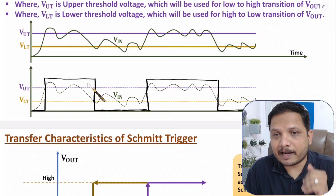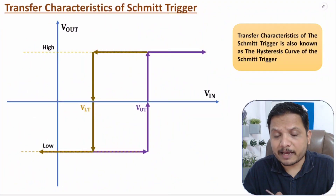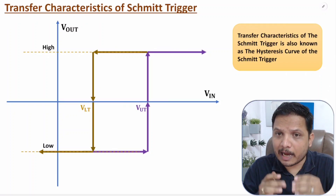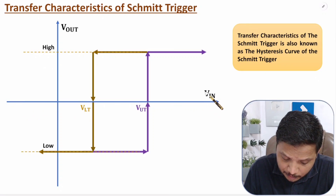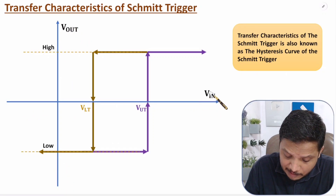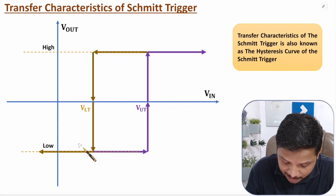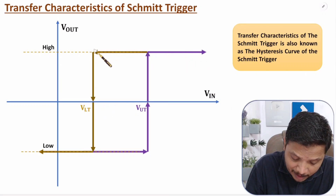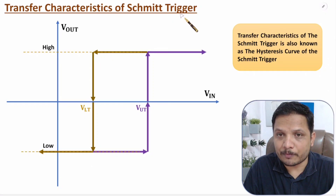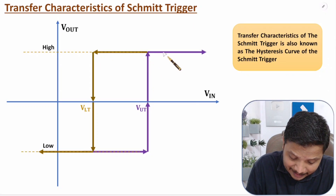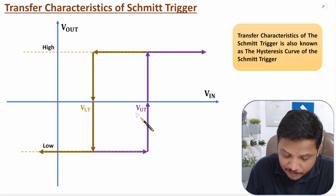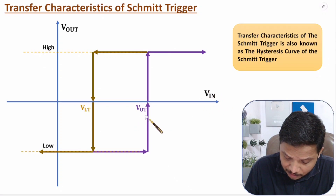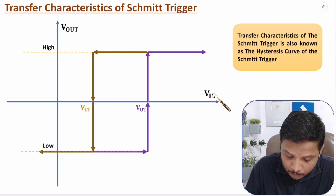Now let us understand the transfer characteristics of the Schmitt trigger. Transfer characteristics show the relationship between input and output voltages — input on the x-axis and output on the y-axis. If input exceeds VUT, there is a transition from low to high. If input goes below VLT, there is a transition from high to low. This characteristic has a hysteresis region between VLT and VUT.